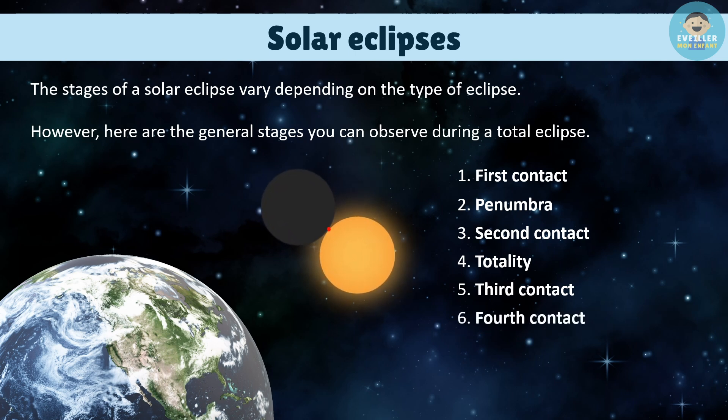Fourth contact: the Moon has completely cleared the Sun. The eclipse is over.